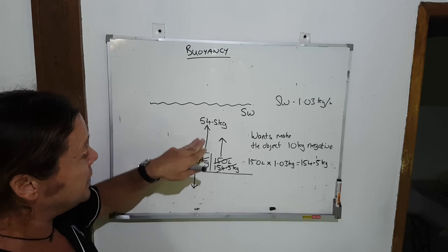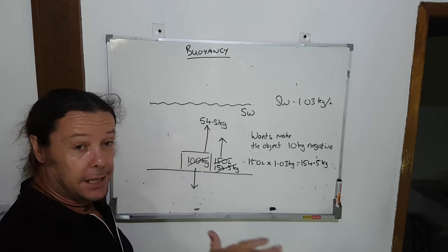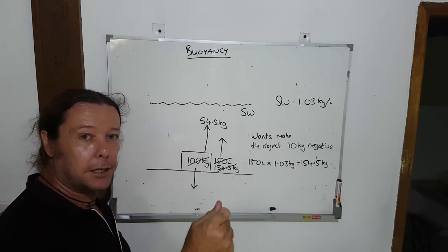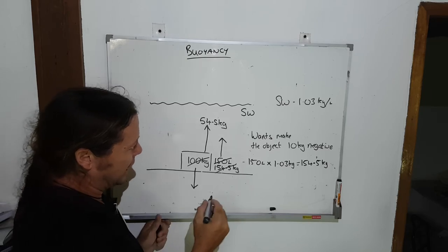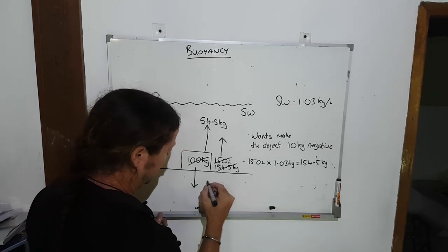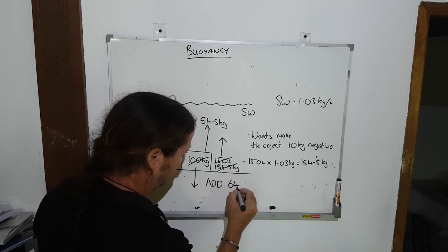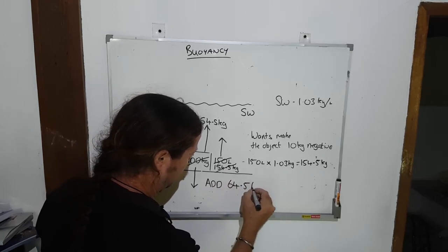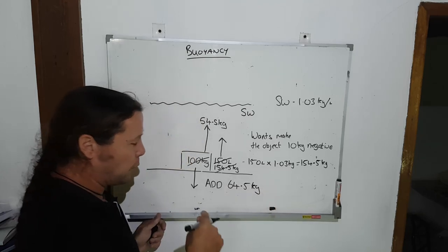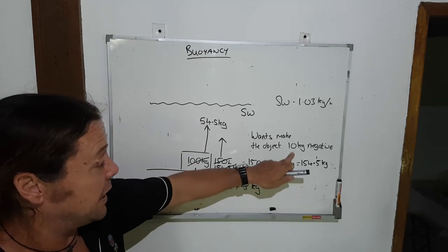But I don't want it to stop. I want it 10 kilos negative. So having added 54.5, it is then at zero. Add another 10. So I need to add to this object 64.5 kilograms, and that will pin it to the floor by 10 kilos.